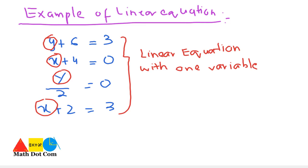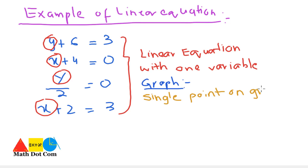When we plot these linear equations on graphs, we will discuss the graphical representation later. When you plot a linear equation with one variable in the x and y coordinates, you will get a single point on the graph. A linear equation with one variable will give you a single point on the graph.